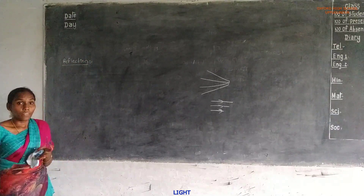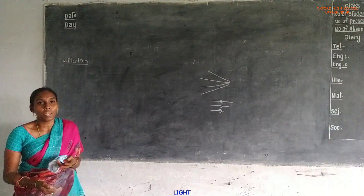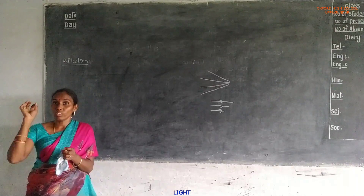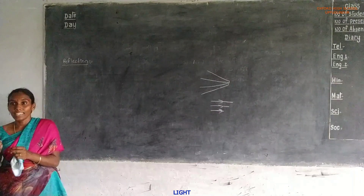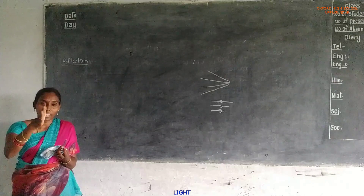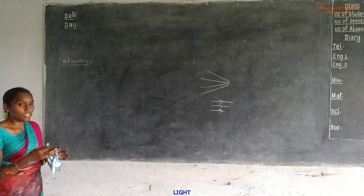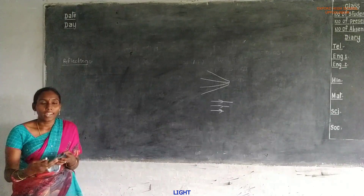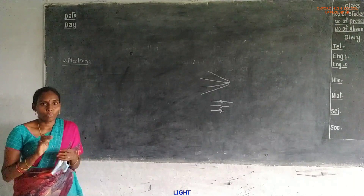Reflection means light comes back into the same medium — the returning of light in the same medium is called reflection. For example, take a ball. If you hit the ball at some angle, the ball is reflected into the same angle in the opposite direction. In the same way, when light is incident on any object or material, the same light is reflected and enters the eye, giving us the feeling of seeing the object.